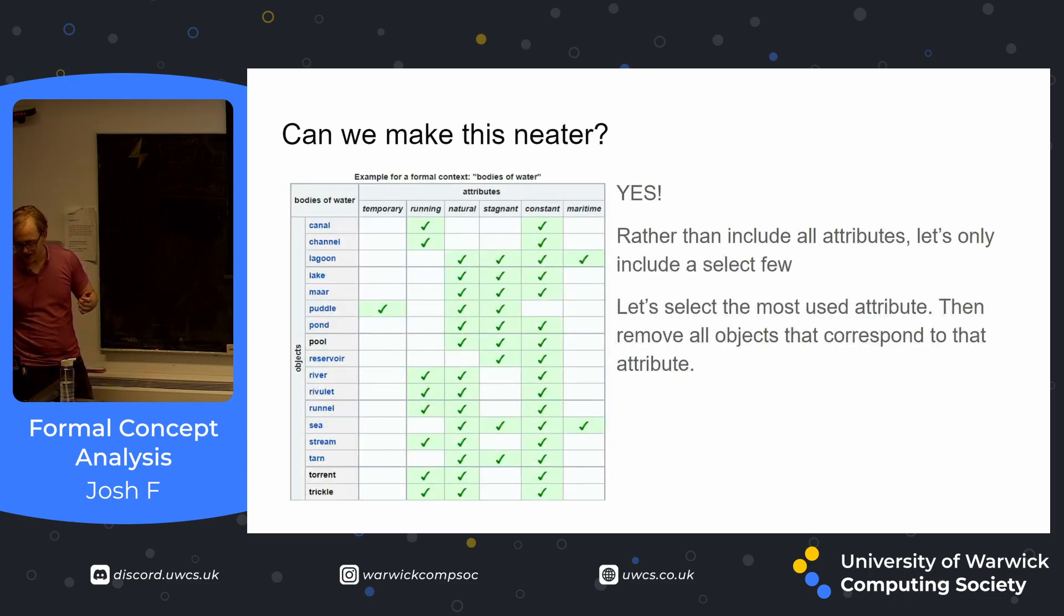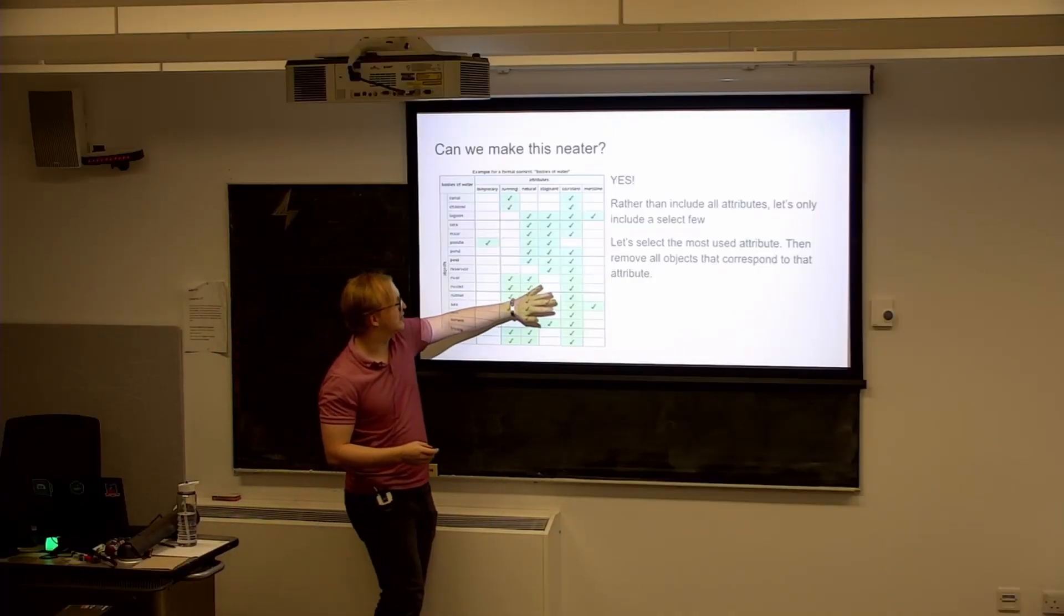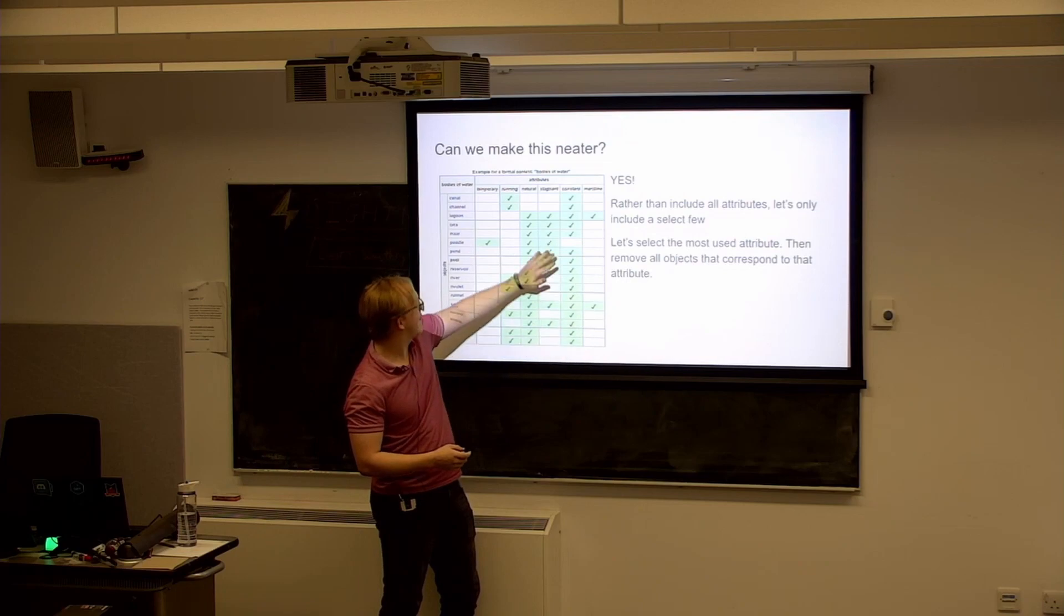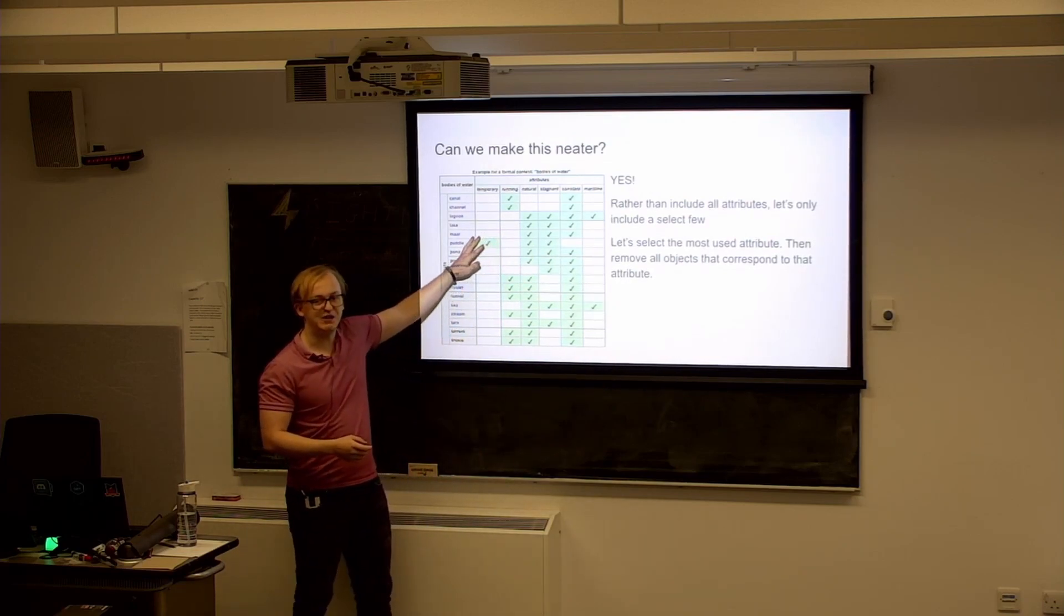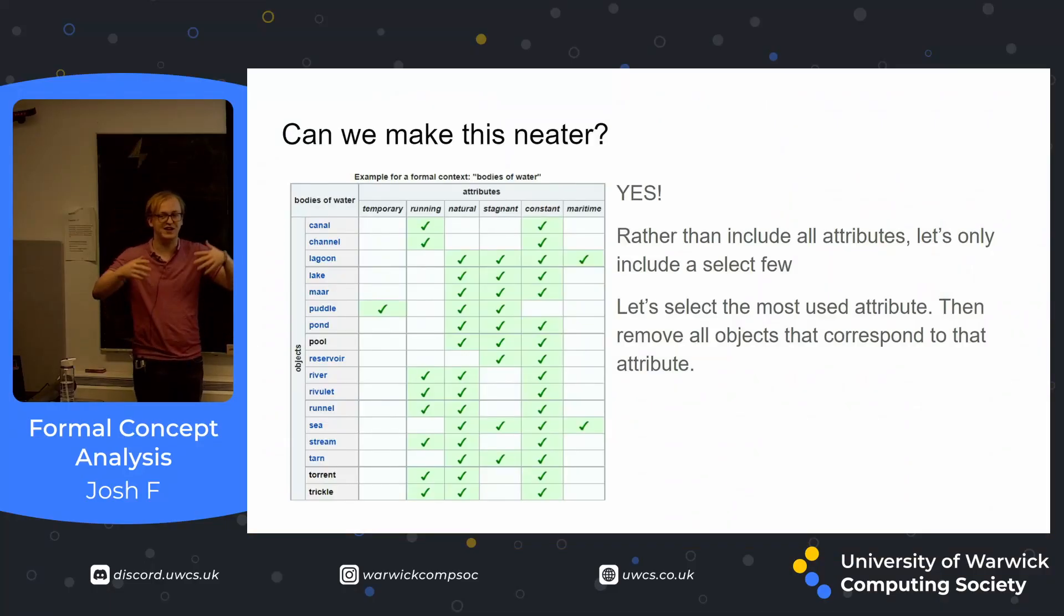So rather than including all of our attributes we are just going to take a subset of our attributes that represent everything. So how are we going to do that? Well let's just select the most used attribute because that means we can filter the most and then make our matrix smaller. This in this example was really bad and won't work because our most used attribute is constant which takes everything apart from puddle. So that means we'll only need one more attribute to represent puddle. And then we just have two attributes that are meant to represent all of this. It's not going to look good. So obviously it has its place and hopefully its place is with our example we did before.